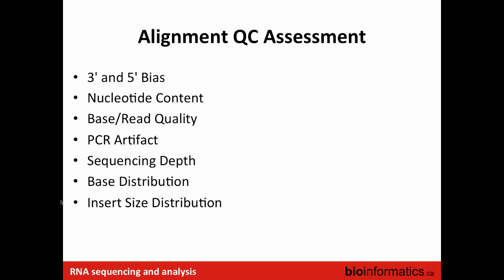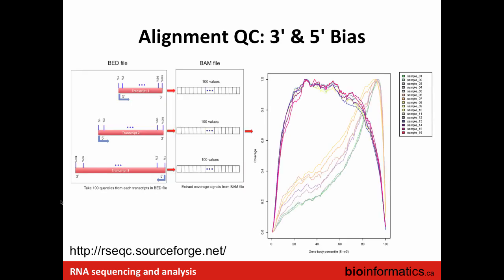We're going to be looking at coverage bias, nucleotide content distribution, base quality, read quality distribution, PCR artifacts, sequencing depth, base distribution, and insert size distribution. All of the plots I'm going to show you come from one tool called RSeQC. You are not obligated to use that tool — you can use whatever you want. These are just guidelines of metrics you can look at. You can write your own scripts or use a combination of other tools, such as Picard's Collect RNA-seq Metrics. Ideally, combine multiple tools when developing a QC pipeline.